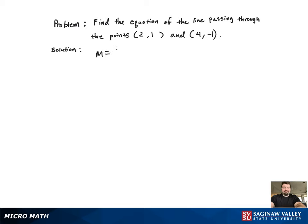First, we're going to find the slope of our line. So we get m equal to negative 1.